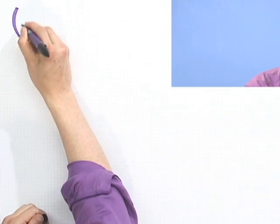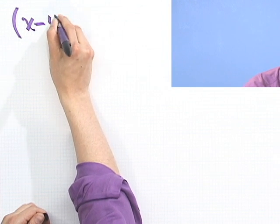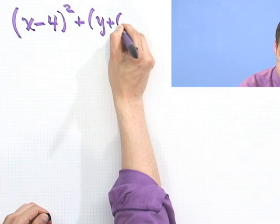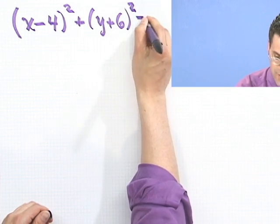Okay, well, suppose someone gives us a formula, and we have to figure out sort of what it looks like. If the formula happens to look something like this: x minus 4 squared plus y plus 6 quantity squared equals 49.